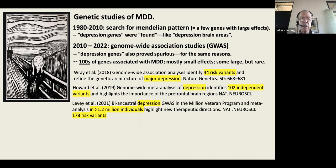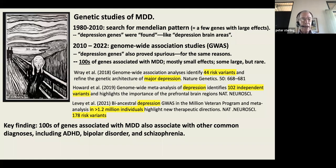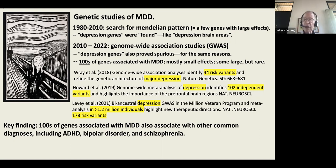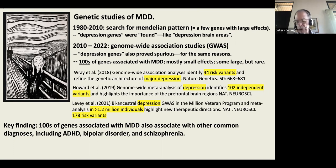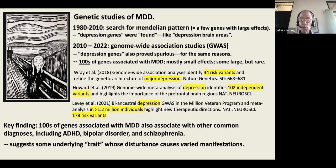One very important result: when you have hundreds of genes associated with major depression, you can look at whether they overlap with other standard diagnoses such as ADHD, bipolar disorder, and schizophrenia — and they do. The same genes associated with one disorder turn up associated with the others, suggesting there's some underlying trait whose disturbance leads to these different manifestations.